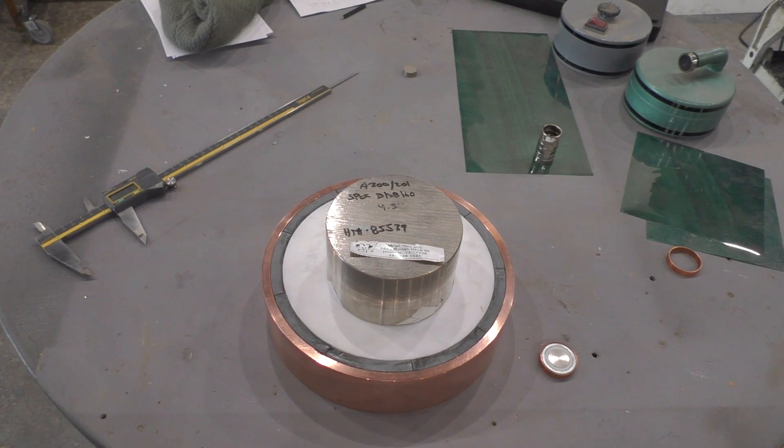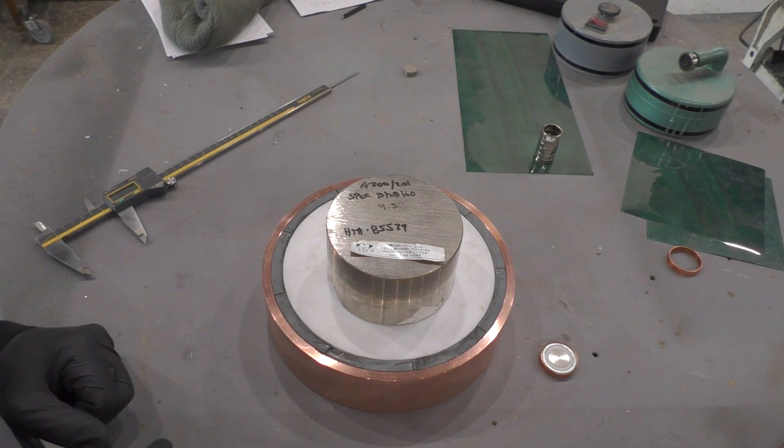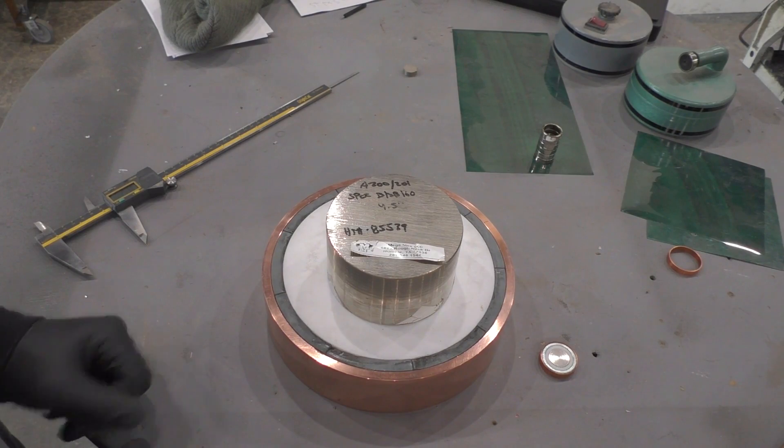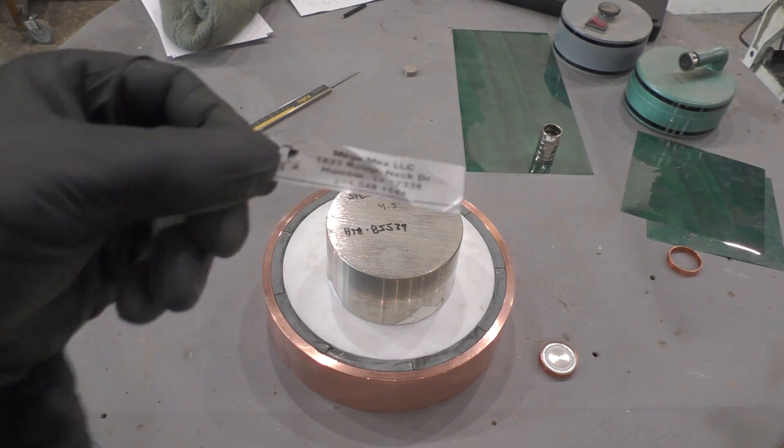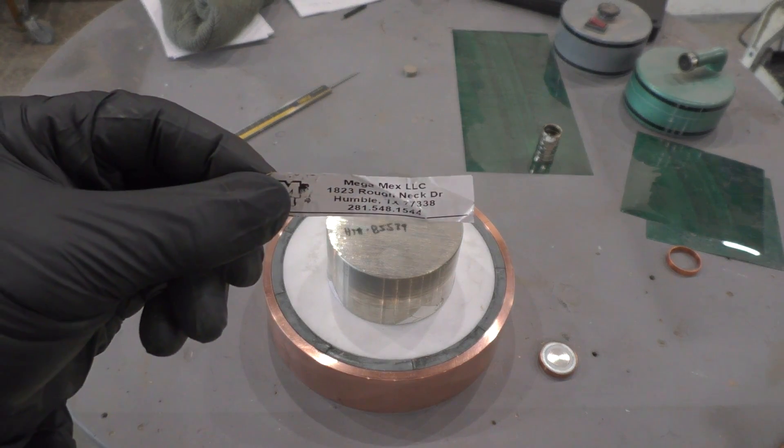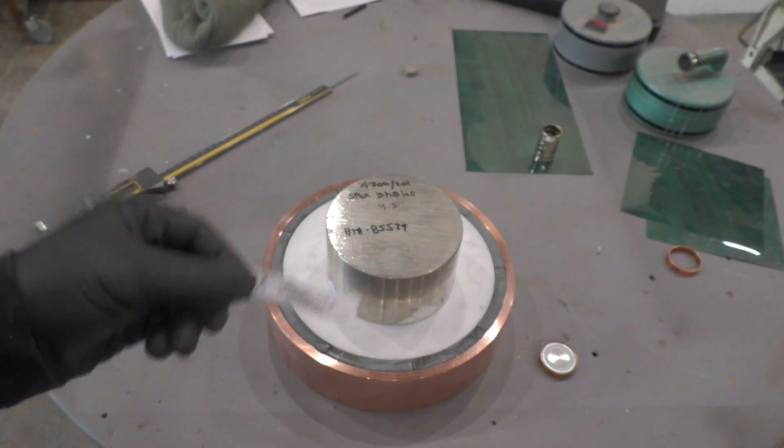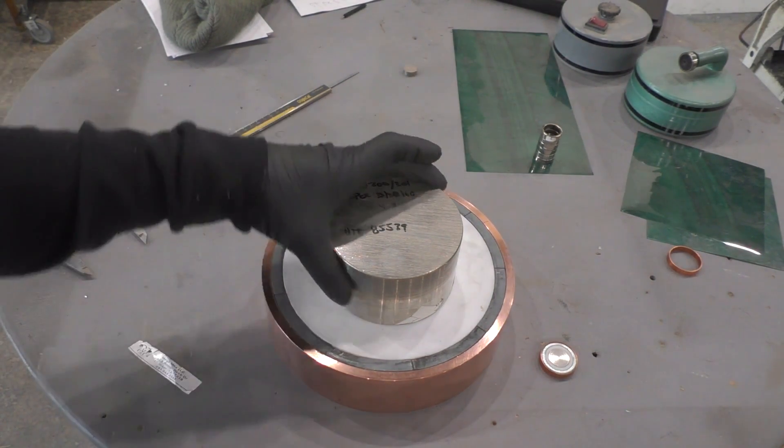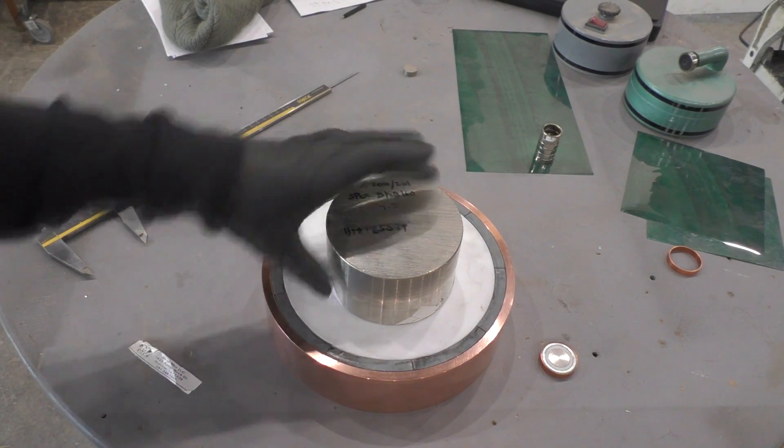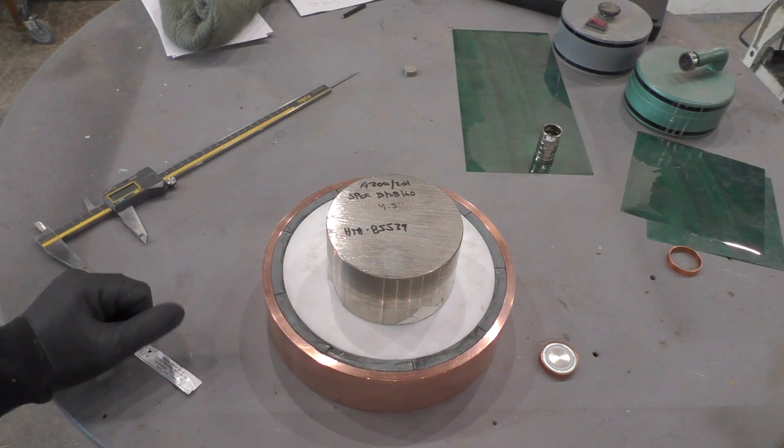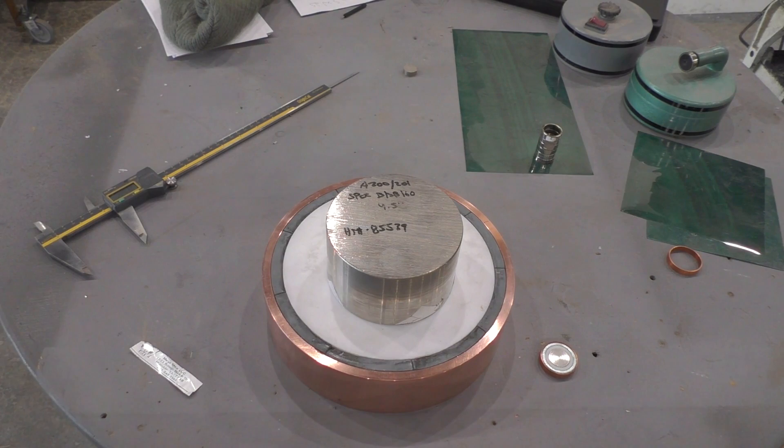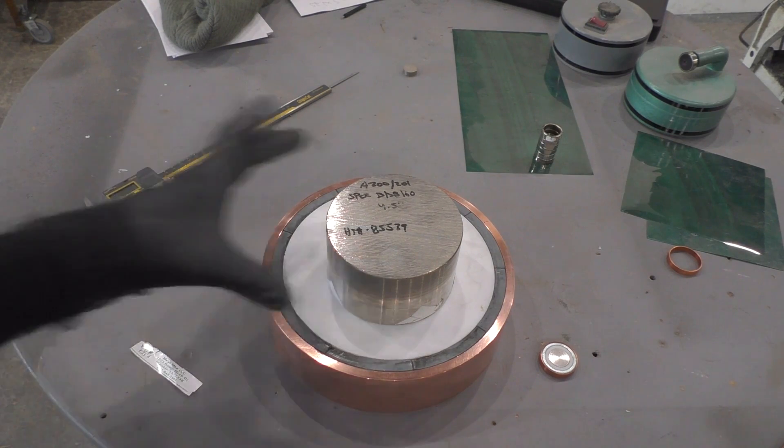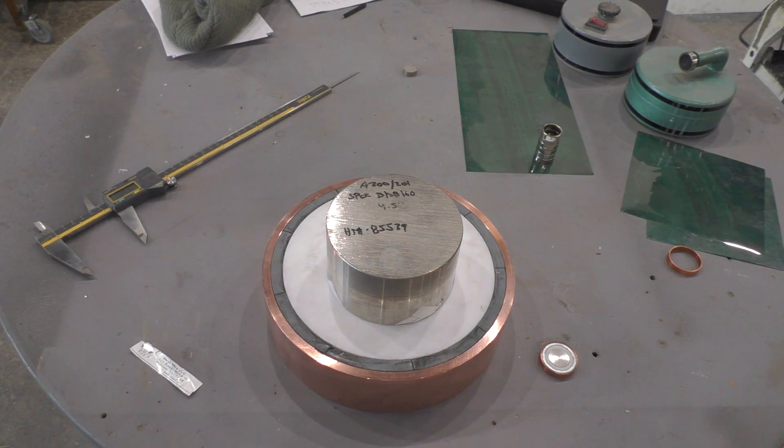So this is the nickel 200 center core material. I bought it through a place called Megamex LLC and I'll provide the link to their company in the description below. It is about four and a half inches across, two and a half inches thick and I'm going to machine it down to be 2.25 inches thick and whatever will fit inside my Teflon piece, three and a half or so.